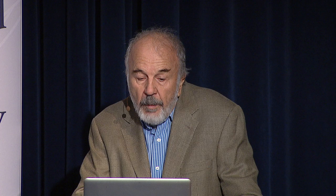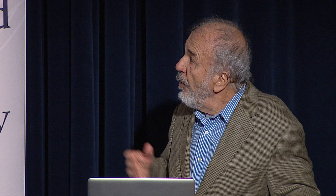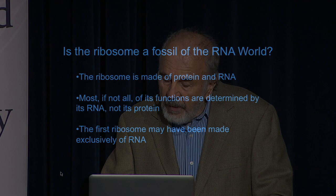Only 1% of the human genome codes for protein, but all of it is transcribed essentially. We know only a tiny fraction of what that 99% is doing, but we know there are critical small RNAs and large non-coding RNAs involved in regulatory functions. So is the ribosome a fossil of the RNA world? It's made of protein and RNA, but most if not all of its functions are determined by its RNA, not its protein. As Francis Crick proposed in 1968, the first ribosome may have been made purely of RNA.